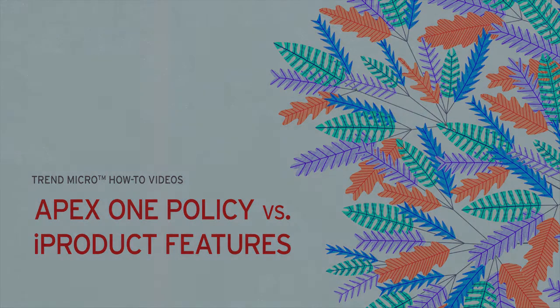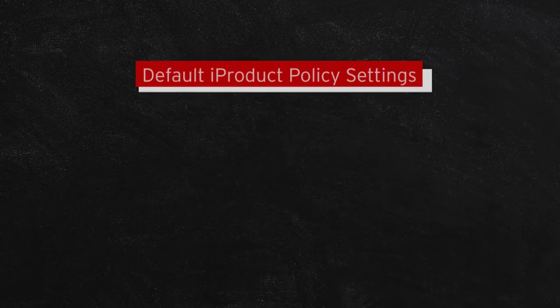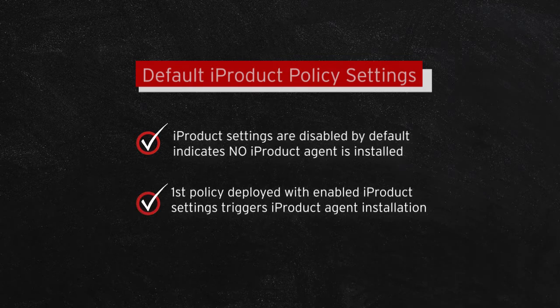The first case we will discuss are the default iProduct policy settings. By default, iProduct settings are set to disabled, which implies iProduct agents are not installed. The very first policy deployment that enables iProduct settings will trigger an iProduct agent installation.